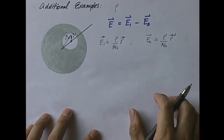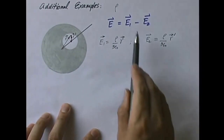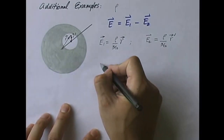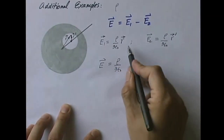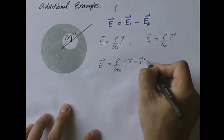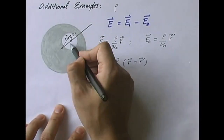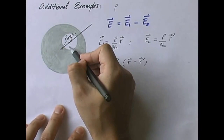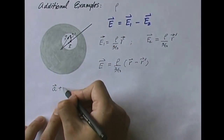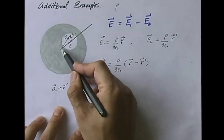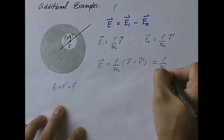The reason why this problem is quite elegant is that both electric fields depend linearly on the vectors R and R-prime. That way, when I add them up, interesting things will happen. E equals E1 minus E2, so it's rho over 3 epsilon-naught times (R minus R-prime). Now, let's draw a vector from here to there joining the two centers — we call this vector A, from the center of the larger sphere to the center of the cavity. A plus R-prime equals R, so R minus R-prime is just A.